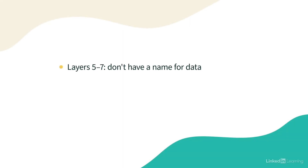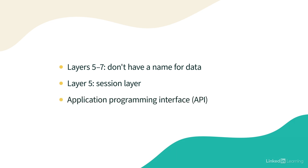The remaining layers five through seven don't have any special name for data. Layer five is the session layer, and it's concerned with establishing, monitoring, and then tearing down communication sessions between our hosts. You might hear the term APIs, which stands for Application Programming Interfaces. APIs let one piece of software on one device talk to another piece of software on another device. And those API sessions give us one example of something we might find here at layer five.